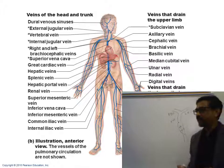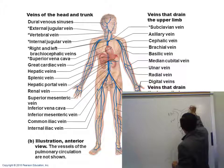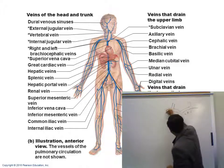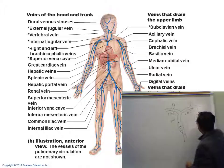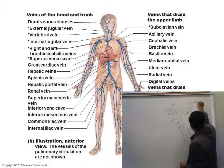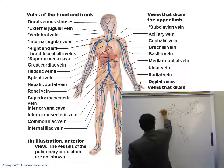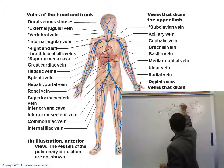The superior vena cava divides into two brachiocephalic veins. The brachiocephalic gives the internal jugular that goes towards the head, and the subclavian vein goes under the clavicle. Subclavian means under the clavicle, so subclavian goes towards the arm. Internal jugular goes to the brachiocephalic.